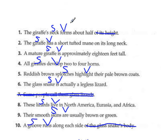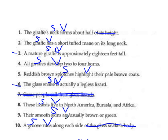All right, so now we're looking for our linking verbs. Is forms linking? No. Has? No — remember, has is not a linking verb. Is? Yes. Develop? No. Highlight? No. Is? Yes. Eight, live? No. Nine, are? Yes.